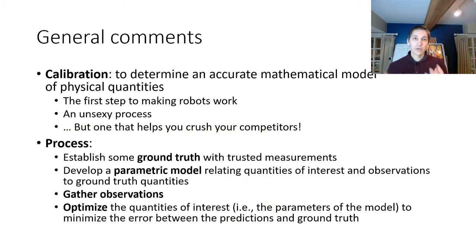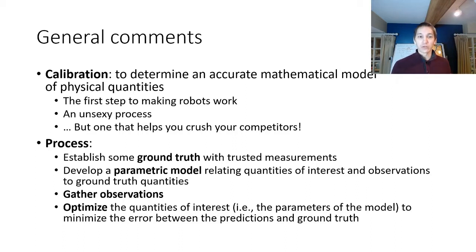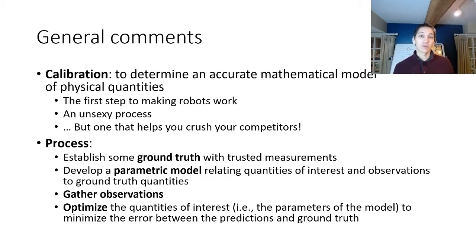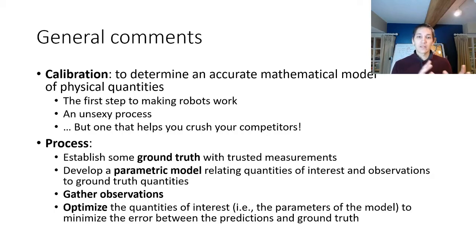The general calibration process is that you have some sort of trusted measurement system, which is known as your ground truth. You will then develop some parametric model that relates the quantities of interest that you care about, and observations that you get from your sensors to some of these ground truth quantities. You'll then gather observations, and then optimize the quantities of interest — which are the parameters of the model — so that you minimize the error between the predictions and your ground truth.